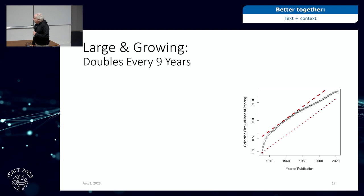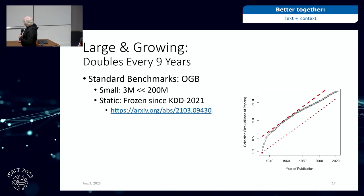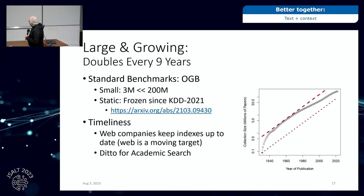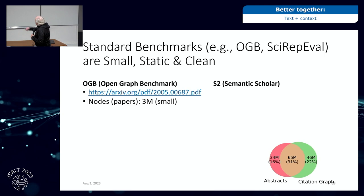I want more realistic benchmarks. The real world is large, growing, messy — and the benchmarks have none of that. The literature doubles every nine years, so 90% of it was written since I was in graduate school. A standard benchmark like OGB — Open Graph Benchmark — is tiny and frozen from the meeting it was prepared for. The web companies know they need to keep things up to date and that the web is a moving target. Academic search is pretty much the same problem — you just can't deal with a tiny benchmark from a few years ago.